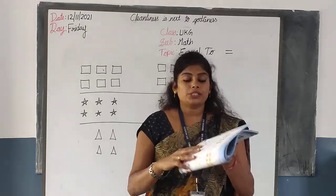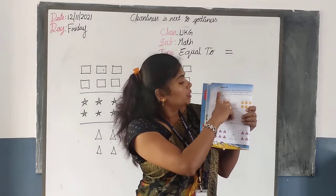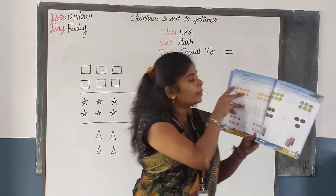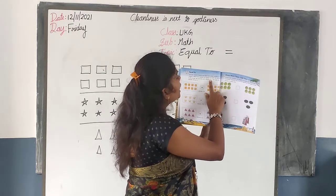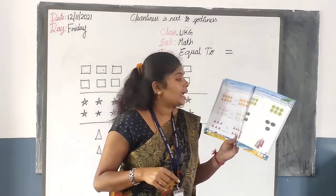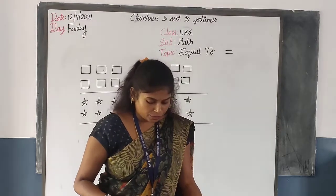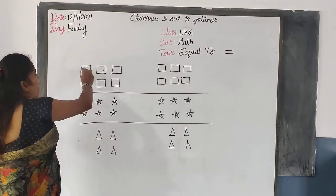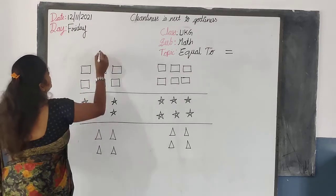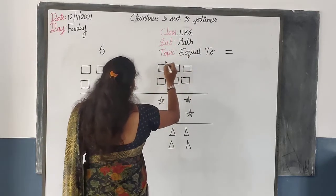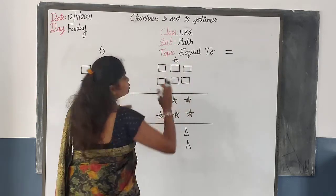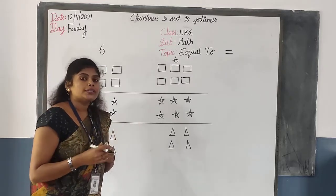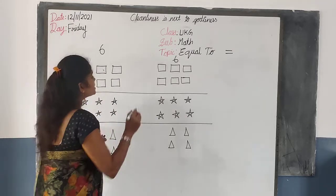Take your math book, page number 36. Page number 36: equal to — the two boxes in each row have the same number of objects. When the number of objects in both boxes is the same, we say they are equal to. The sign for equal to is this. Please look at the board. You can see the objects. See the left side: one, two, three, four, five, six. How many objects are there? Six. Now count the right side: one, two, three, four, five, six. Both sides have the same number of objects.